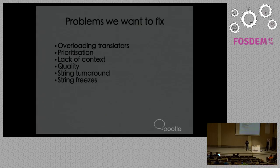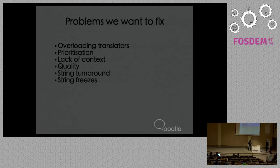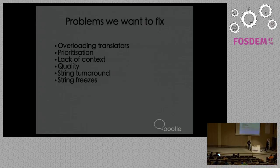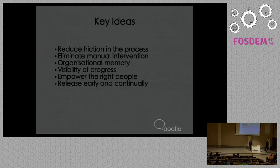Some of the processes we've seen over the years we want to fix — continuous localization is part of what fixes us. Strangely, even as continuous localization means things move more quickly, we feel some approaches to continuous localization will actually reduce the load on translators: really focusing on which things are more important, providing much more context, having a strong focus on quality in the same way that continuous integration looks at checks, having really quick processes to turn strings around very quickly, and breaking the concept of string freezes — creating a system that is much more dynamic.